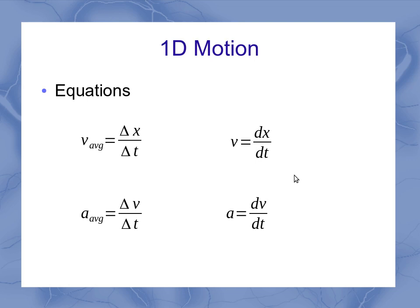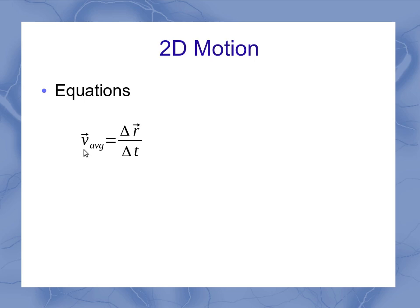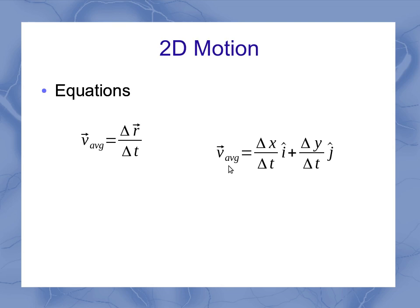If I want to work in two dimensions, let's look at each one of these equations separately. In two dimensions, my average velocity vector is the displacement vector, which is now delta r over delta t. Because delta r is a vector, I can break that down into its components to find that my average velocity vector has an x component and a y component, where the x component is delta x over delta t and the y component is delta y over delta t. The delta x over delta t is the x component of the average velocity, and the delta y over delta t is the y component of the average velocity.